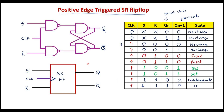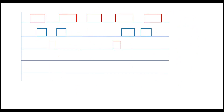Now I will explain the working of this circuit with a waveform. Consider the clock signal, the S input, the R input, and the Q output. The rising edges of the clock signal are known as positive edges, and the falling edges are known as negative edges. The flip-flop is active only at these positive edges for a positive edge-triggered flip-flop.